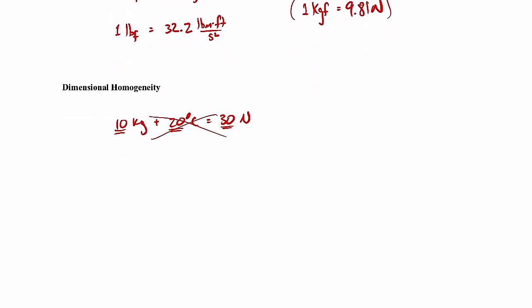Similarly, then the magnitudes of the numbers have to work out. If I wrote 10 kilograms plus 20 kilograms equals 40 kilograms, well then it's dimensionally homogeneous. But the numbers don't work out. 10 plus 20 does not equal 40. So that doesn't work either.